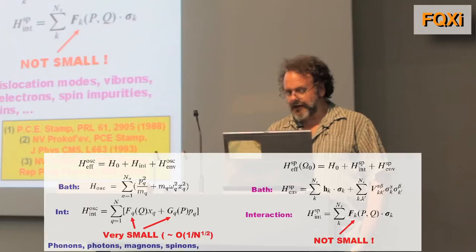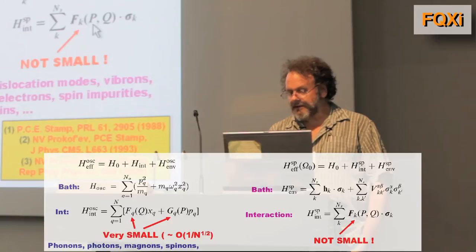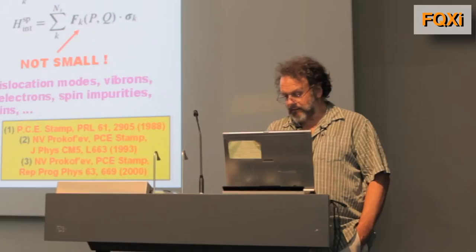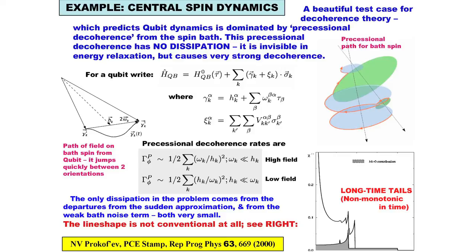However, as I pointed out, most modes at low temperatures are actually localized in the environment, and they have to be modeled typically as two-level systems or spins — so I'm going to model them as Pauli matrices. Typically, the coupling between them and our localized system may not be small, so we can't use perturbation theory. The first models of this kind that were really studied in detail were actually studied in quantum glasses, and they were introduced by Phil Anderson and others back in the 70s.